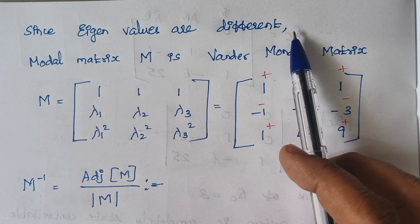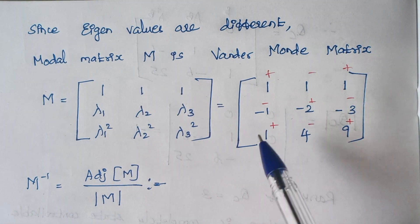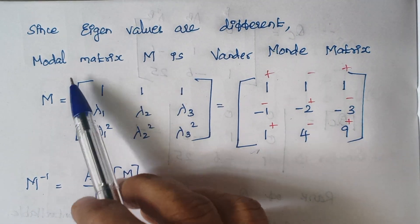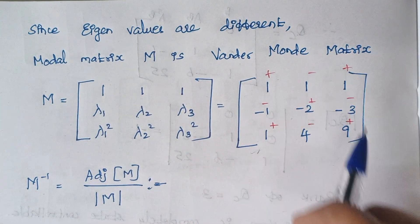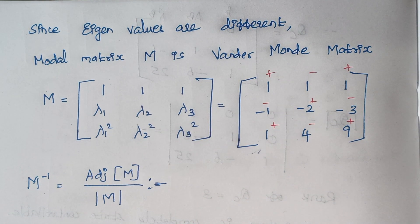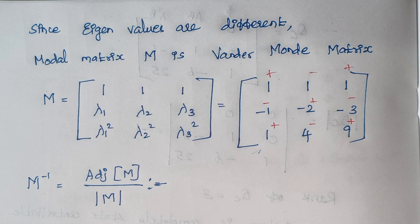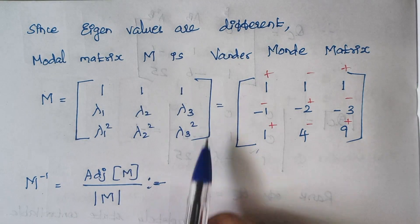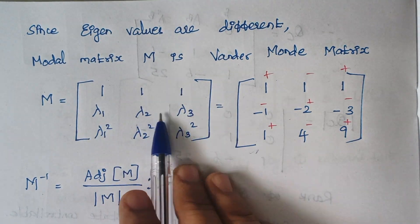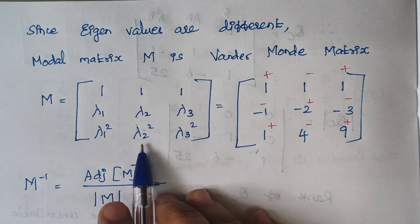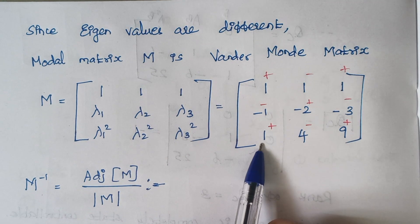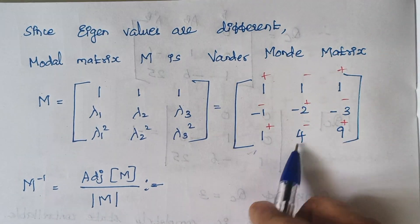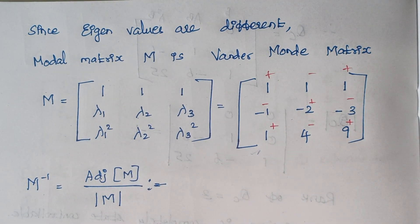Since the eigenvalues are distinct, the modal matrix M is the Vandermonde matrix. Its form is: row 1 = [1, 1, 1], row 2 = [λ₁, λ₂, λ₃], row 3 = [λ₁², λ₂², λ₃²]. Substituting: (−1)² = 1, (−2)² = 4, (−3)² = 9.